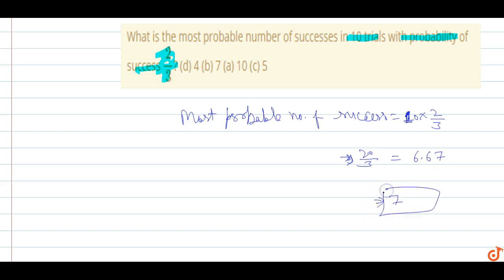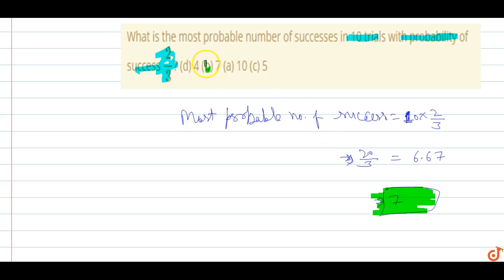So the most probable number of successes in 10 trials comes out to be 7. Option B will be the correct option — 7 is the most probable number of successes in 10 trials with probability of success 2/3. This is the answer.